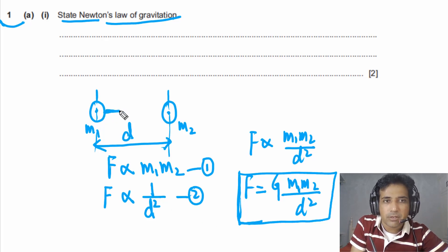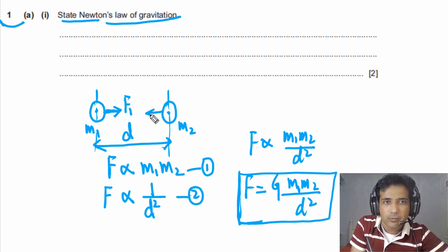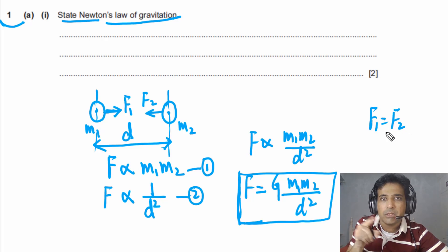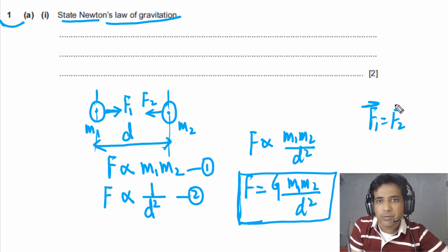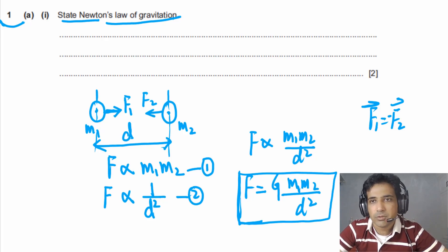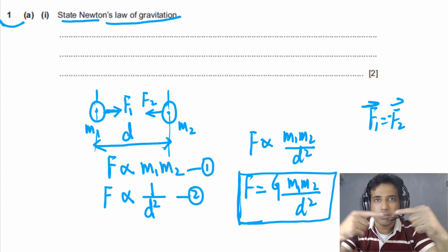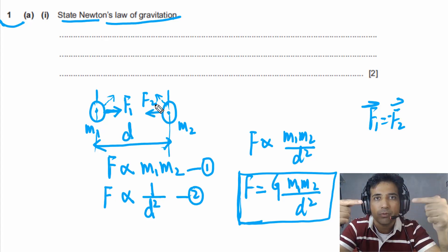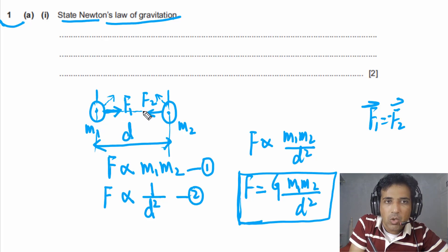The gravitational force on the first object (F1) equals the gravitational force on the second object (F2) in magnitude, but their directions are opposite. We can use a negative sign to indicate this. Also, gravitational force is a central force, so it acts from center to center along the line joining the two masses.